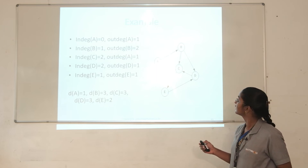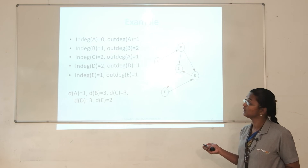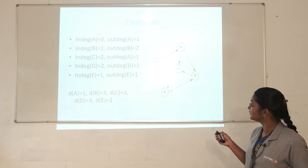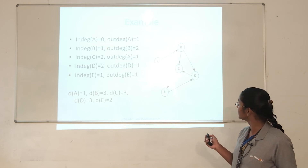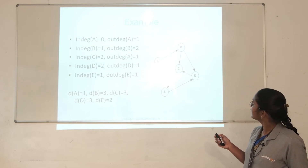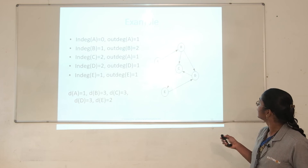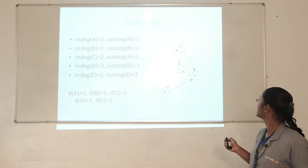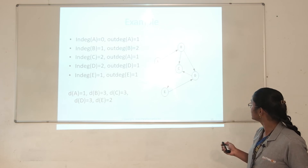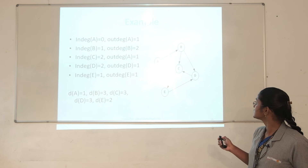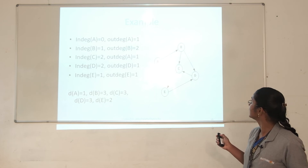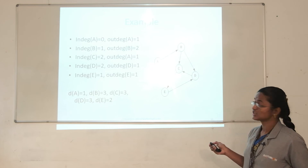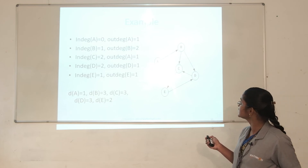For example, consider the directed graph with five vertices a, b, c, d, e. There are edges from a to b, b to c, d to e, e to d, d to c, and b to c as well. There are six edges in this graph.